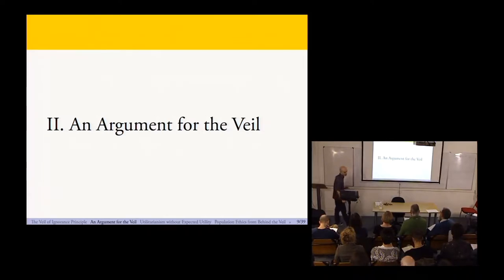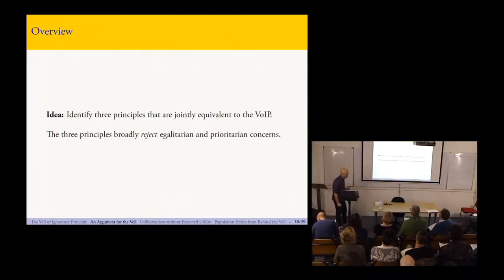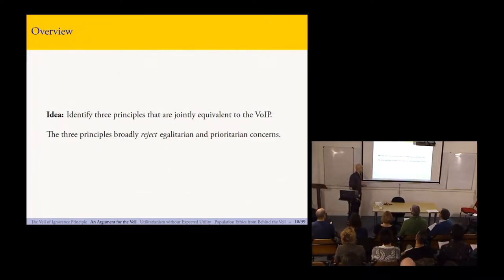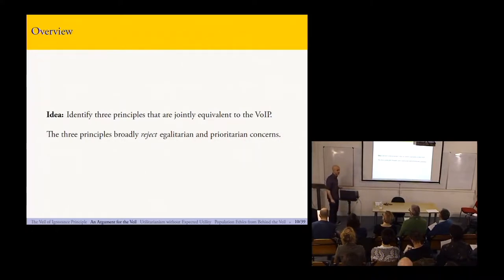What I'm going to show, or at least sketch, is that there are three plausible principles that entail — and in fact are jointly equivalent to — the veil of ignorance principle I formulated. These three principles derive from standard examples in distributive ethics, and specifically reject, or can be seen as rejecting, egalitarian and prioritarian concerns. The argument, as I'm going to give it, most directly implicates people who are already friendly to utilitarianism.